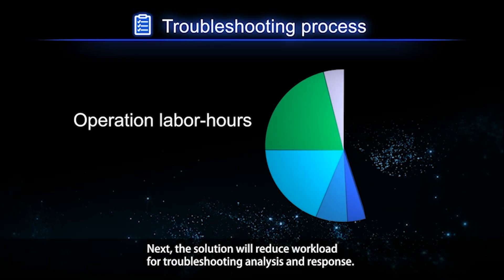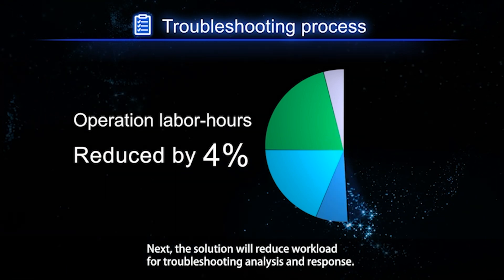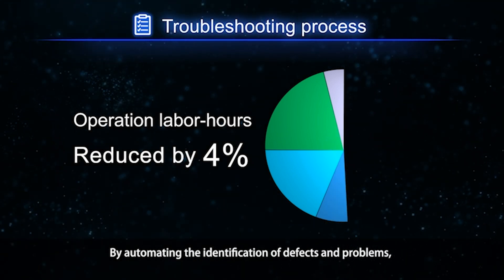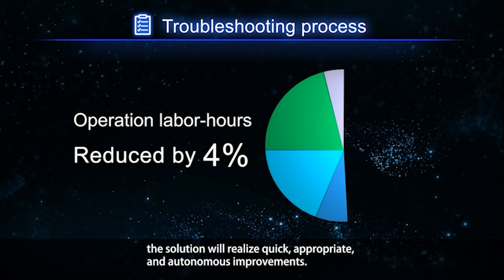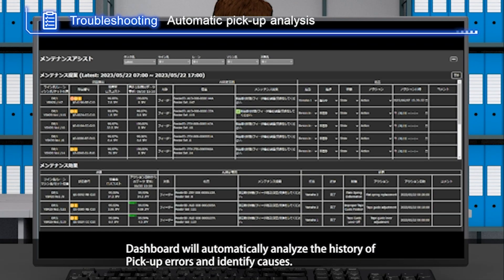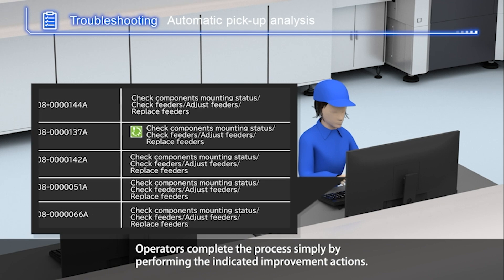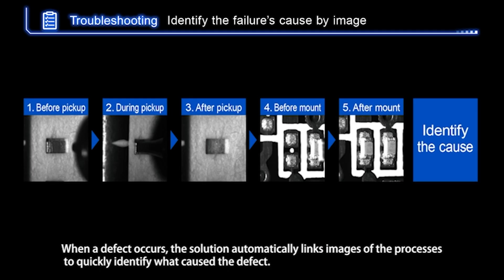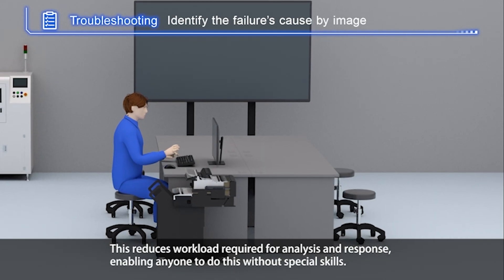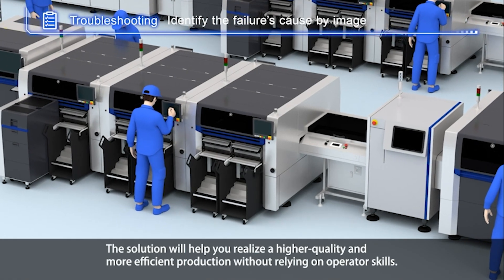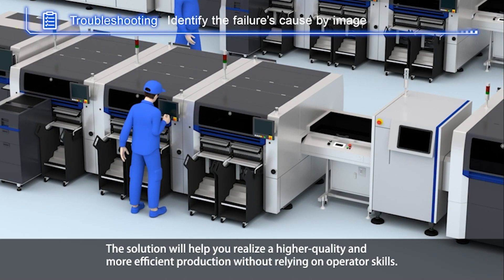Next, the solution will reduce workload for troubleshooting analysis and response. By automating the identification of defects and problems, the solution will realize quick, appropriate and autonomous improvements. The dashboard will automatically analyze the history of pickup errors and identify causes. Operators complete the process simply by performing the indicated improvement actions. When a defect occurs, the solution automatically links images of the processes to quickly identify what caused the defect. This reduces workload required for analysis and response, enabling anyone to do this without special skills. The solution will help you realize higher quality and more efficient production without relying on operator skills.